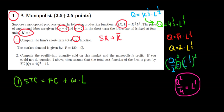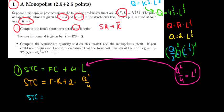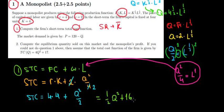Now we can substitute this into our total cost function. The fixed cost is the capital used times the interest we pay for it: R times K. So that's R times K plus the wage, which is $2, times the labor, which is Q squared divided by 4. We know R equals 4 and K equals 4, so 4 times 4 plus 2 times Q squared over 4. The 2 and 4 cancel, giving Q squared divided by 2. Written more neatly, the short-run total cost function is 1/2 Q squared plus 16. That's the answer to question one.